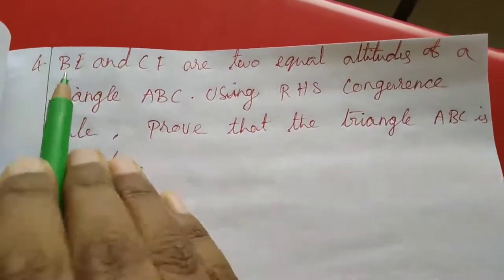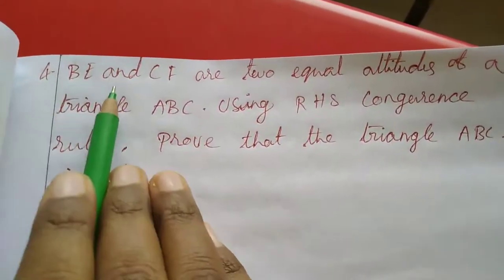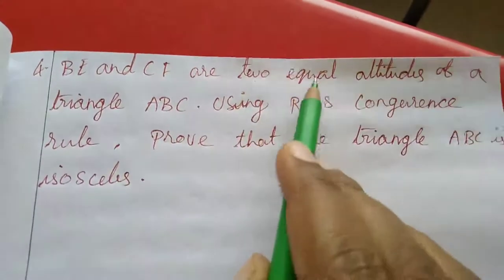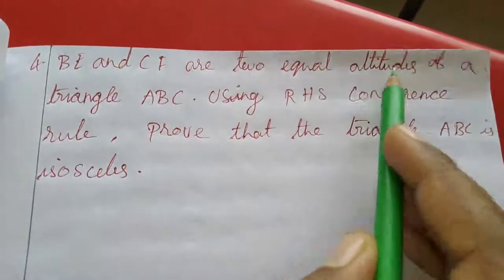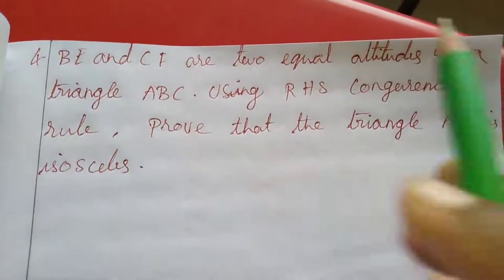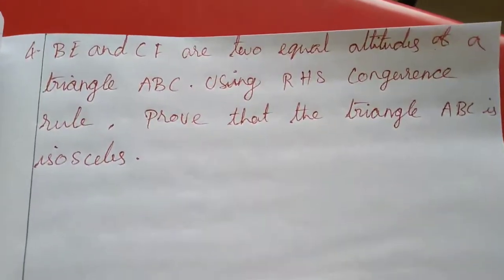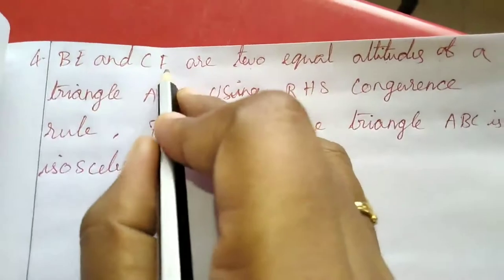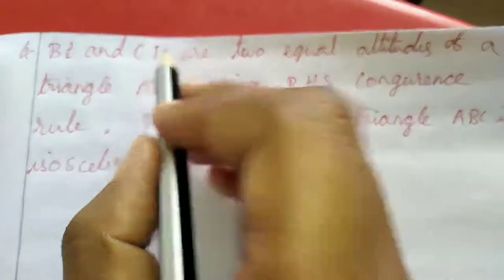Now fourth sum. B and CF are two equal altitudes of a triangle ABC. BC and F in triangle BCF are the equal altitudes.